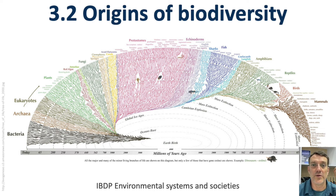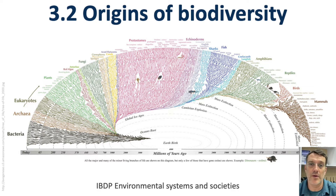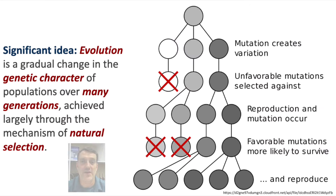Welcome back to a new video for IB Environmental Systems and Society. Today's video is about topic 3.2, Origins of Biodiversity. It's going to be a quick review to help you get ready for your mock exams and those big IB ESS examinations at the end of the school year. Let's get into it.